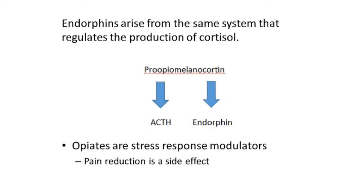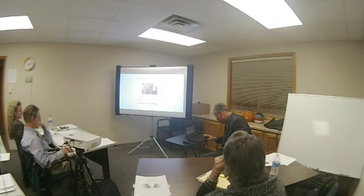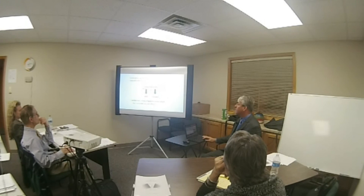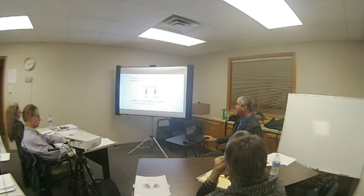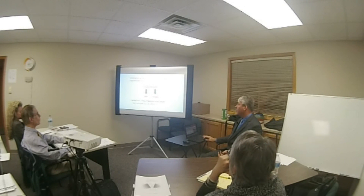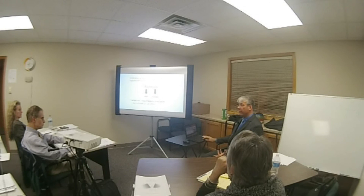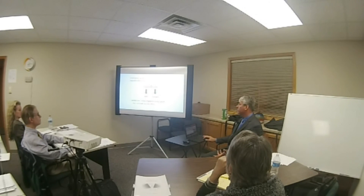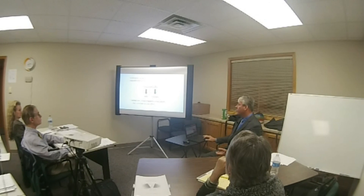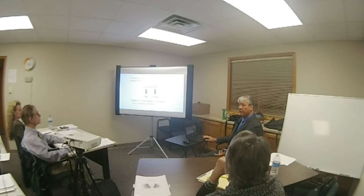Endorphins rise from the same system that regulates the production of cortisol — a molecule called pro-opiomelanocortin, or POMC. 'Pro' because it's the precursor; 'opio' because it's the source of endorphins. This molecule is broken down into three chunks: the opio part is the source of beta-endorphin; the melano part is the source of melanin-stimulating hormone, which is why we feel so much better on a sunny day; and the cortin part, because this same molecule is also broken down into adrenocorticotropic hormone (ACTH), which regulates cortisol production.